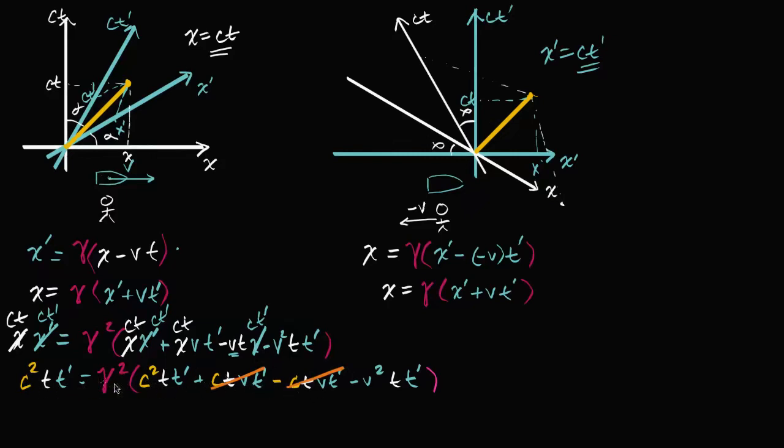And then every other term has a t t prime in it. So let's divide both sides of this equation by t t prime. And so if we divide the left hand side by t t prime, we're just gonna be left with c squared. And then we're just gonna divide everything by t t prime. And our whole thing has simplified quite nicely. Our equation is now c squared is equal to gamma squared times c squared minus v squared.